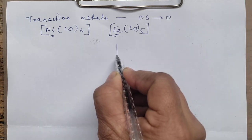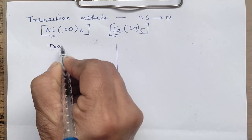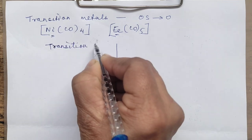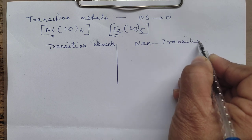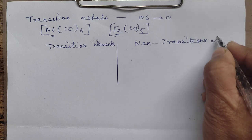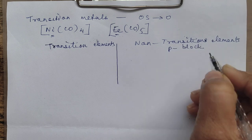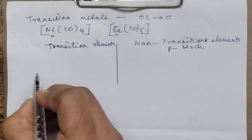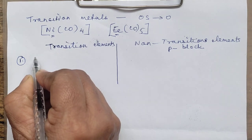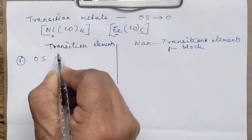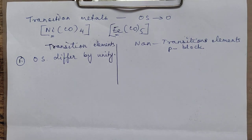Another important thing: at times you are asked to compare the oxidation states of transition elements with non-transition elements — by which we mean P block elements. There are two major differences. The first difference is that in transition elements, the oxidation states differ by unity.